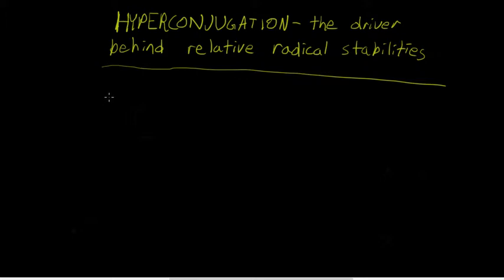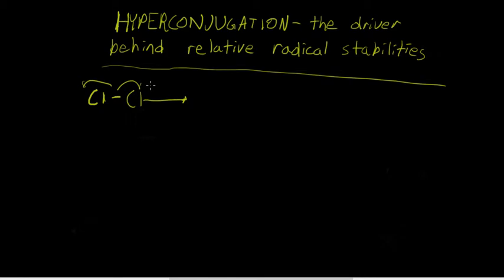Let's take a look at the mechanism of radical chlorination of propane. First, of course, we have to furnish the chlorine radical. This is going to require energy, usually in the form of UV light. That's the initiation step.